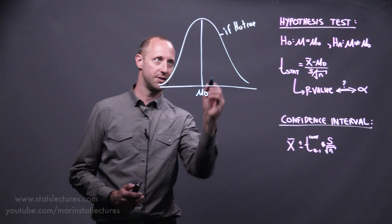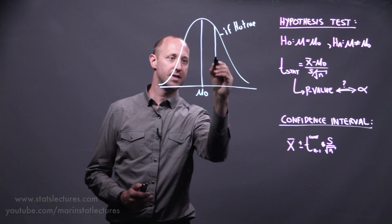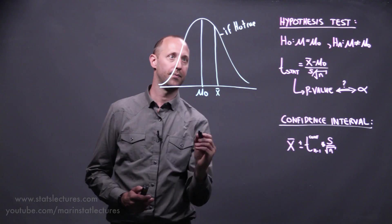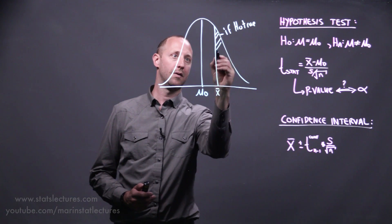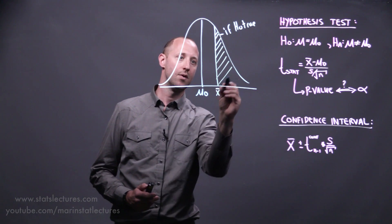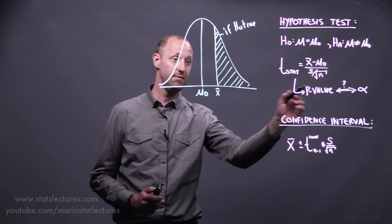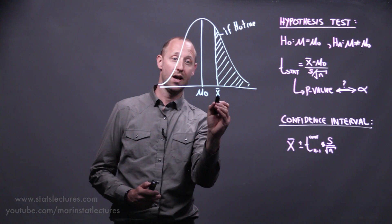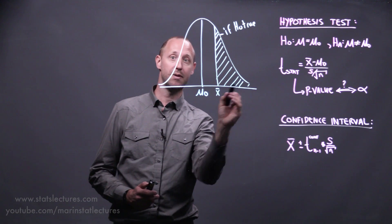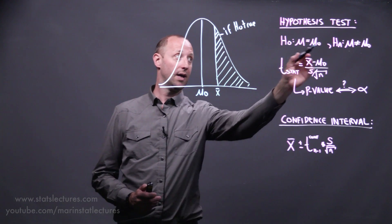Then we calculate some test statistic. Suppose that the sample mean we got was here. We're going to end up standardizing this or calculating a test statistic and a resulting p-value, which is going to tell us how likely were we to get this estimate or one more extreme.